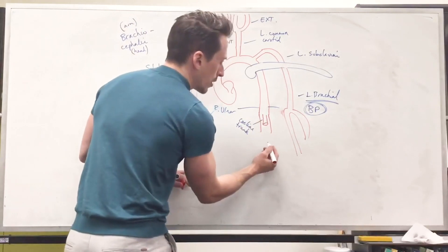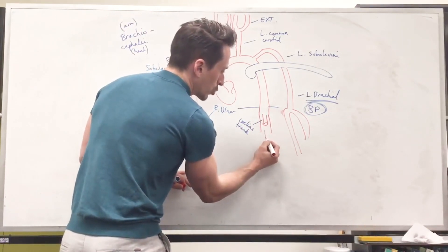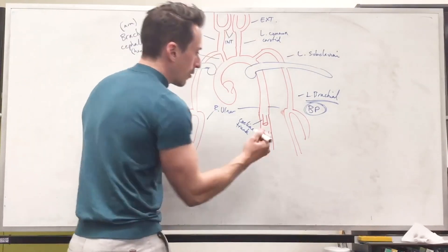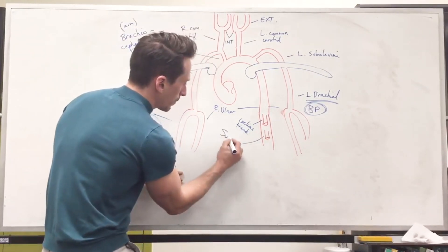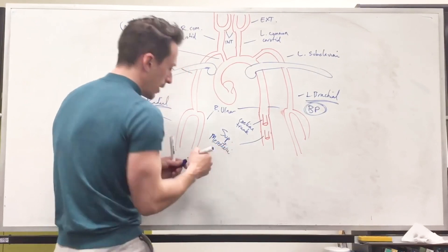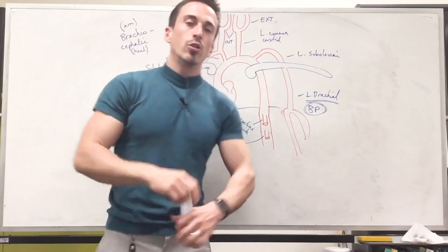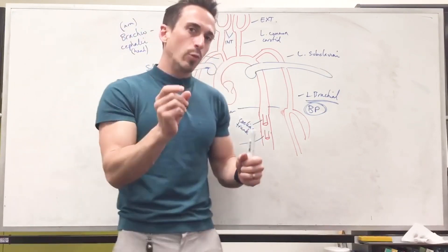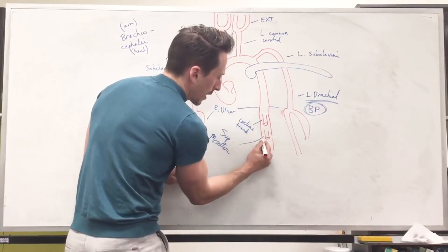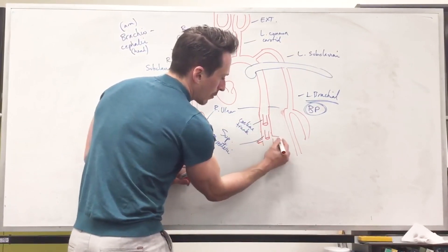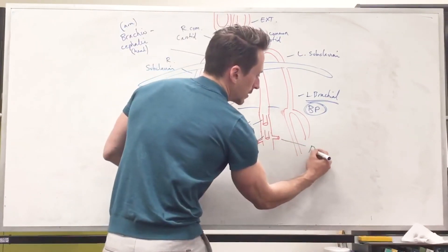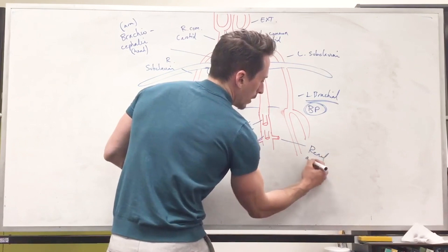Now, below the celiac trunk, we've got another branch called the superior mesenteric that comes off, and the superior mesenteric artery, that's going to give blood to most of the small intestines, a little bit of the large intestines. Now, basically, nearly either side of this, you're going to have a paired artery coming out, and that's going to be the renal artery that's going to give blood flow to the kidneys, the paired renal arteries.